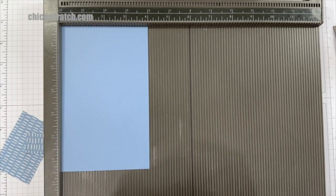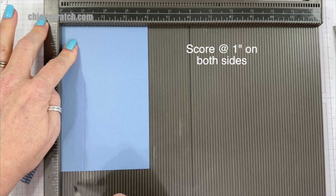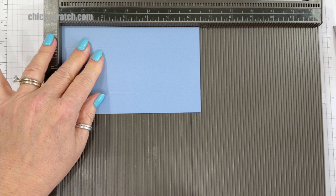Okay, we're going to place it on the four inch side and we're going to score it at one inch on both sides. So flip it around. One inch.